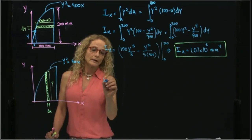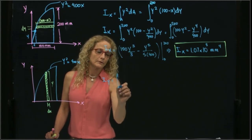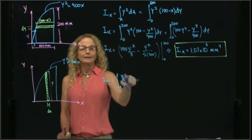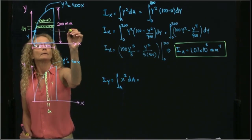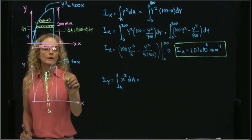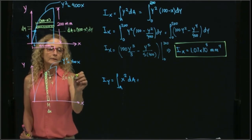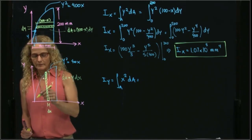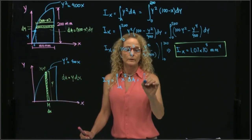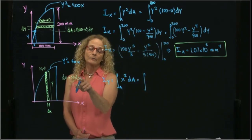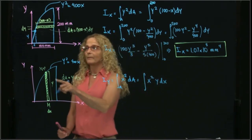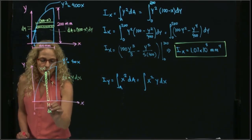For Iy, which has a similar definition but now the variable squared is x squared, the differential of area changes. Previously my differential of area was 100 minus x dy; now my differential of area is y dx, because this point here is (x, y). Substituting, my limits of integration will be from 0 to 100, so the integral is x squared times y dx from 0 to 100.